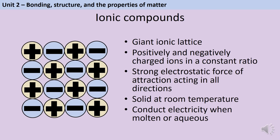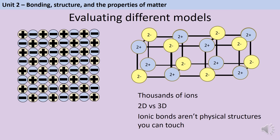Ionic compounds are solids at room temperature because the strong electrostatic forces require a lot of energy to overcome. They can conduct electricity when melted or dissolved in water, because the charged particles must be free to move. Neither a 2D nor 3D diagram fully represents the thousands of ions involved; the 3D model better shows the structure but implies bonds are physical objects rather than electrostatic forces.